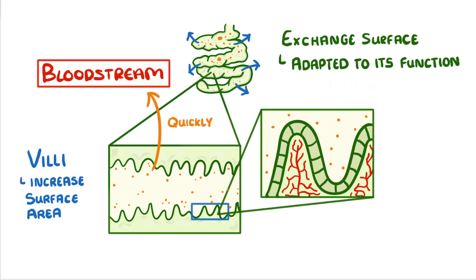Two other adaptations to notice are that the villi only have a single layer of surface cells, which means that the nutrients only have to diffuse a very short distance, and that they have a very good blood supply, which maintains the concentration gradient.